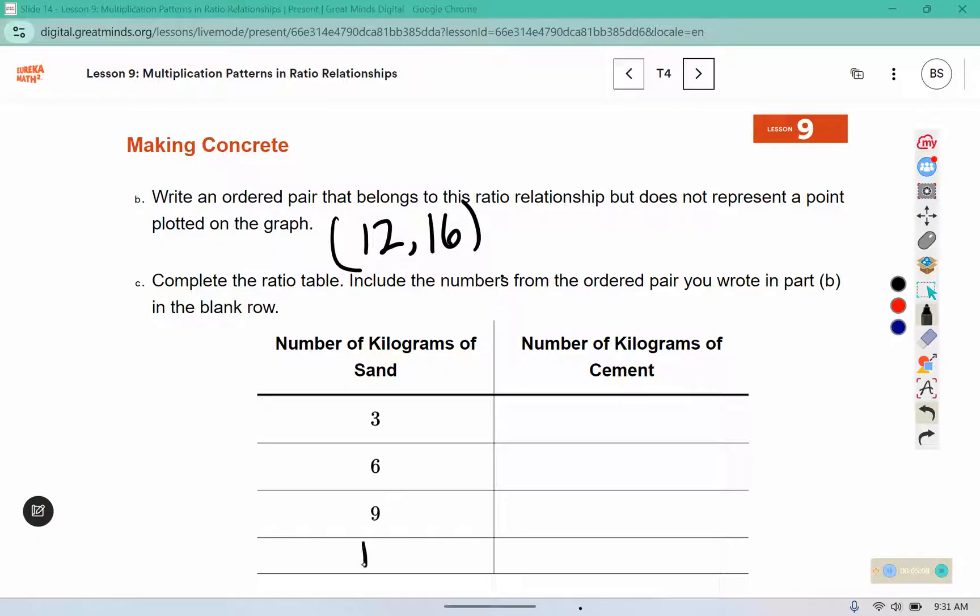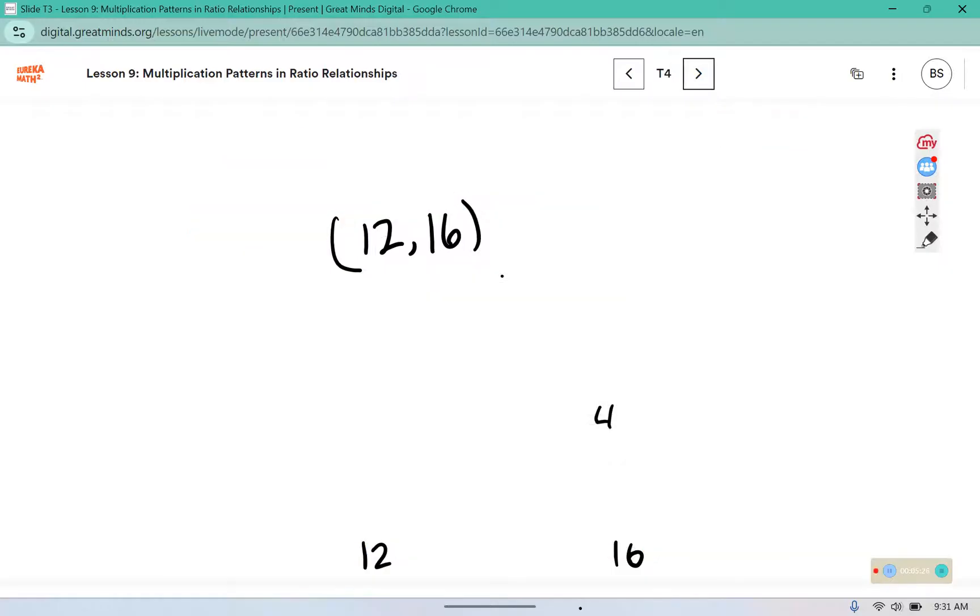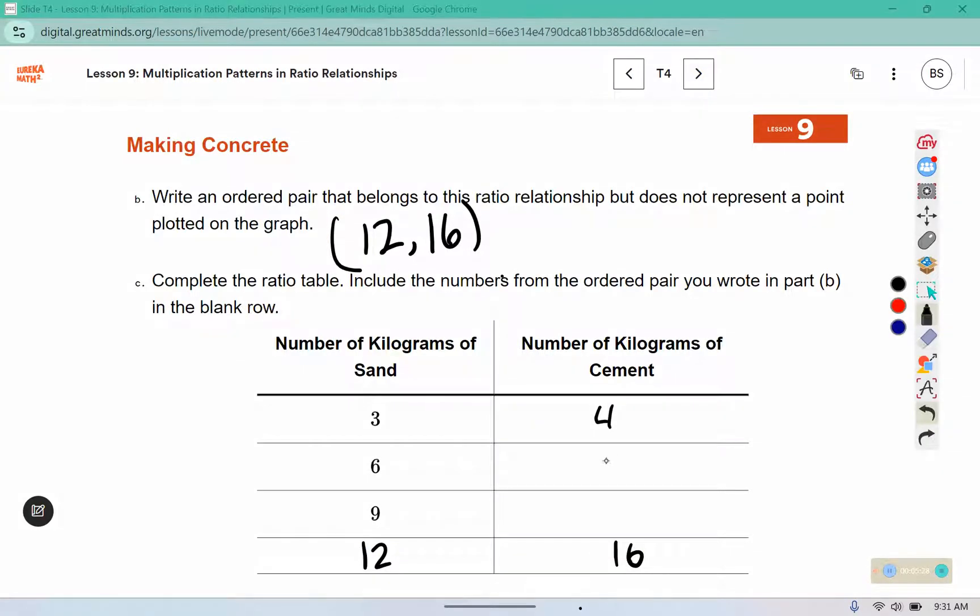So we're going to write 12 and 16 in our blank row. That first point was at 3, 4. If we go back, we can see this one is at 6 and 8. And if we keep that pattern going, adding 3 to the sand and 4 to the cement, we should end up with 9, 12.